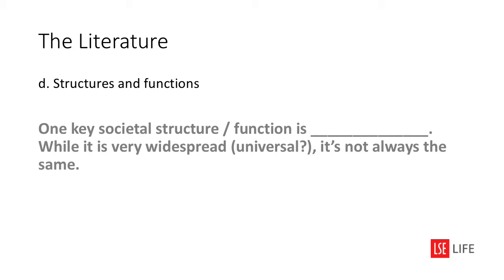'One key societal structure or societal function is ___, while it's very widespread and maybe even universal, it's not always the same.' Think about a structure or function — this could relate to law, government, work, schools, or families. Consider how it works and how it can differ across groups. Could there be interesting questions about these differences — what causes them, or what is caused by them?